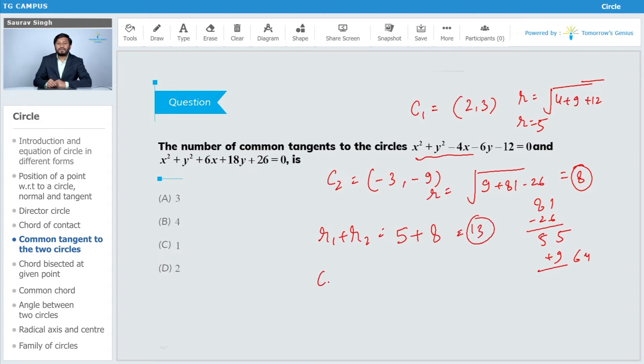Now let's find C1C2. The distance C1C2 is 3 plus 5 the whole square plus 12 the whole square, that is equal to 13. Now we have C1C2 equal to r1 plus r2. For this case, we are going to have three common tangents. So answer is A.